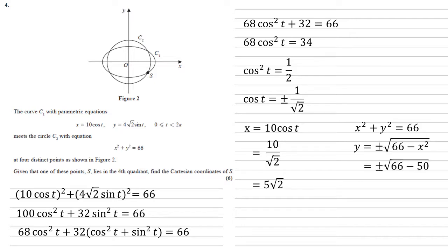Substituting 5 root 2 into that, we get plus or minus the square root of 66 minus 50, which is plus or minus root 16, which is plus or minus 4.